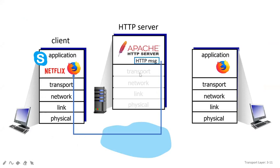We have the layers: application layer, transport layer, network layer, link layer, and physical layer. This shows how from the client side it is going to communicate with the server side — even if you are using some different platform — using this multiplexing and demultiplexing method.